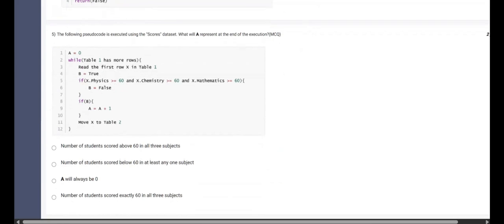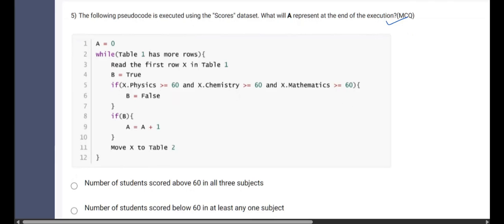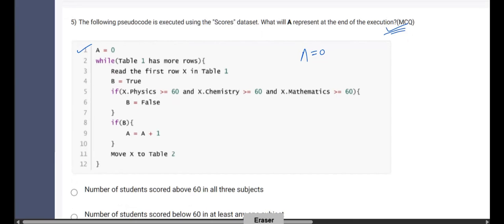Now coming to question number five. The following pseudocode is executed using scores dataset. What will A represent at the end of execution? A is equal to zero. Great. Let us note it out. And while table 1 has more rows, read the top row in table 1 and also we initialized another variable named B to true. If X dot physics, see this is happening for every subject, physics, math, chemistry, MPC. If any of them is greater than or equal to 60, that means if the score is at least 60 for the student in any of the subject, then we are updating B to false.